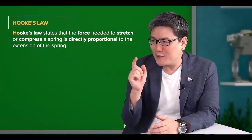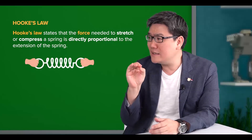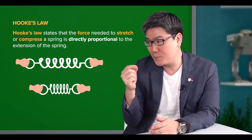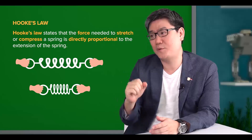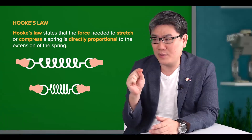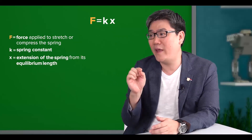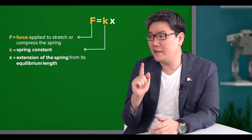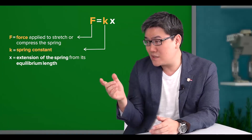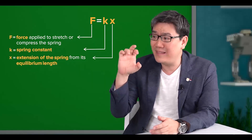Hooke's Law is a physics principle which states that the force needed to stretch or compress a spring is directly proportional to the extension of the spring. The equation of this principle is given by F equals kx, where F is the force applied to stretch or compress the spring, k is the spring constant, and x is the extension of the spring from its equilibrium length.